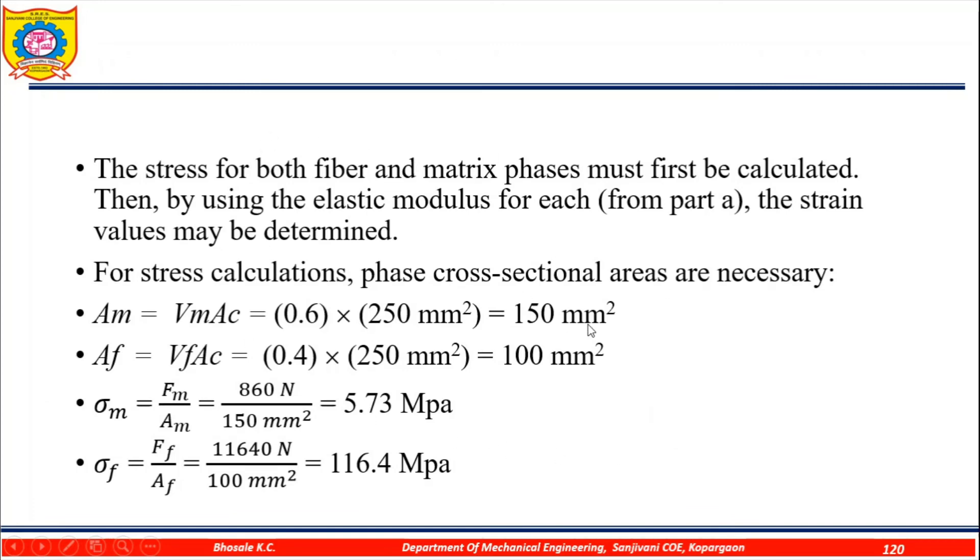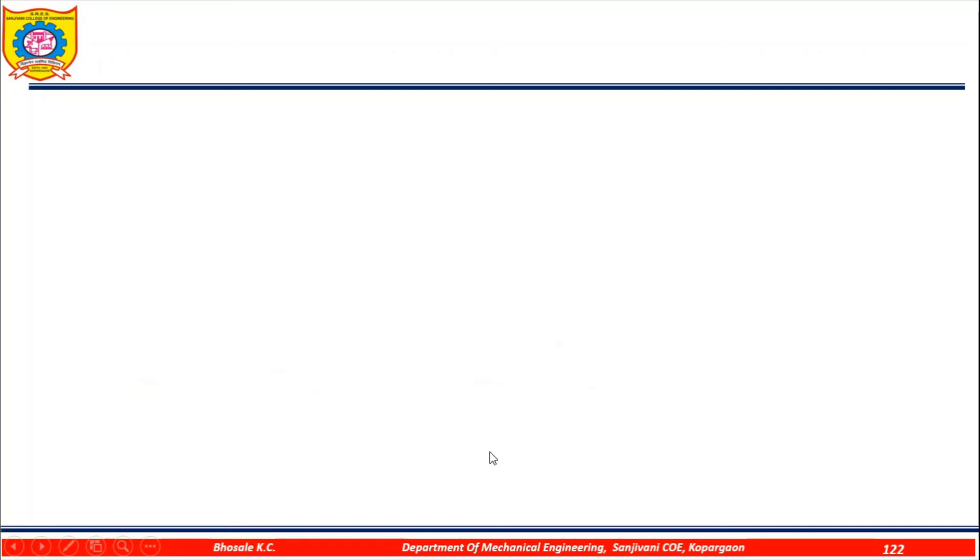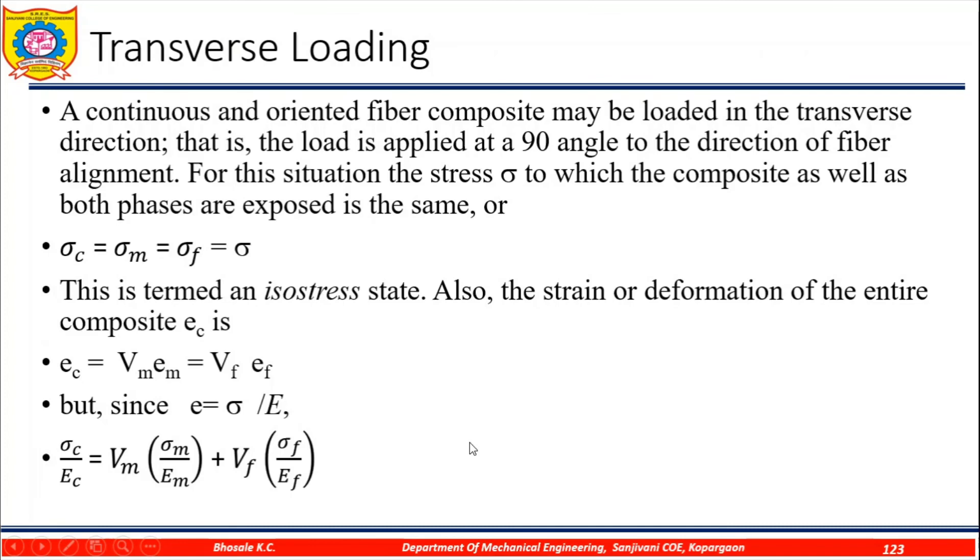The stress for the fiber and matrix phase must first be calculated. Then, by using the elastic modulus for each, the strain values may be determined. For the stress calculation phase, cross sectional areas are necessary. Find out the areas and then find out the stresses in the matrix and the fiber. Finally, we can find out the strain in the matrix and the fiber. Therefore, strains for both matrix and fiber phases are identical.